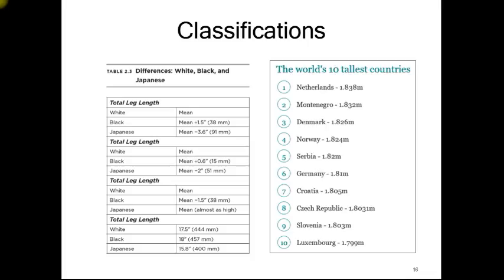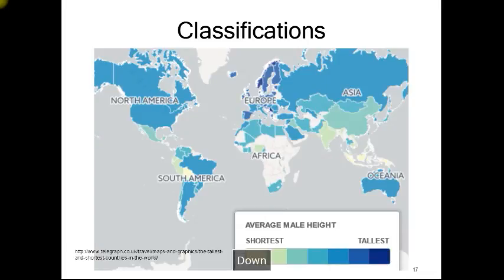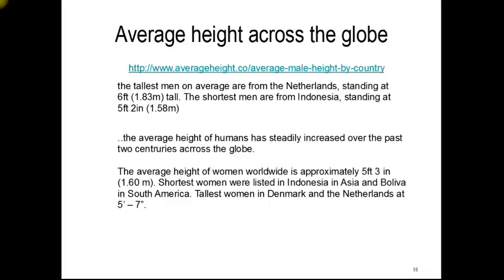There is quite a big difference in just leg length alone between different populations. There are websites for this — looking at the 10 tallest countries among European nations, people from the Netherlands are among the tallest. A world map shows taller people concentrated in northern areas. The tallest men on average are from the Netherlands at 6 feet, and the shortest are from Indonesia at 5.2 feet. Women are smaller across the board as well.